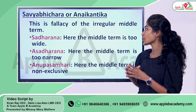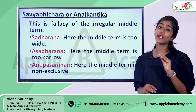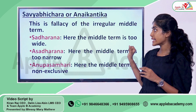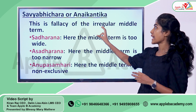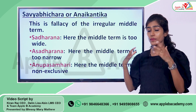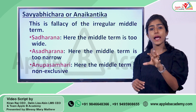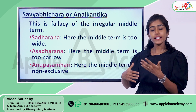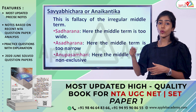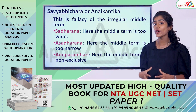This particular fallacy happens because the middle term is too wide. In Asadharan it is because the middle term is too narrow, and in Anupasamhari the middle term is non-exclusive. We can call Savyabhichar as a fallacy of the irregular middle term — that is a very important idea. Asita is another fallacy that happens because of an unproved middle term. So Savyabhichar or Anikantika is a fallacy that happens due to an irregular middle term.